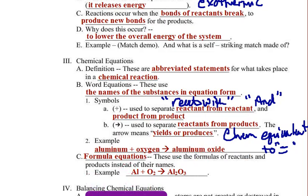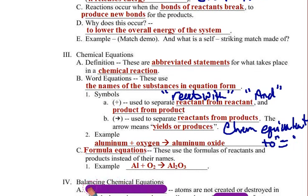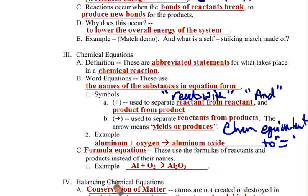Once we've established our formula equations, we get into balancing chemical equations. We balance chemical equations in order to obey the law of conservation of matter. According to the law of conservation of matter, atoms are not created or destroyed in a chemical reaction, so the overall number of each kind of atom does not change from reactant to product. Whatever atoms you have to begin with, they have to be there when you finish.